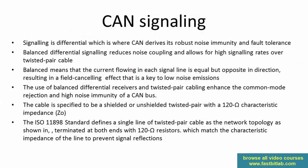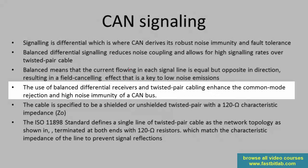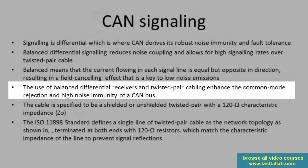Balanced means that the current flowing in each signal line is equal but opposite in direction, resulting in a field canceling effect that is key to low noise emissions. The use of balanced differential receivers and twisted pair cabling enhances the common mode rejection and high noise immunity of a CAN bus.